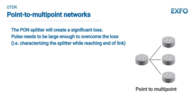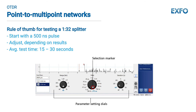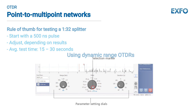Real-time mode is not useful in point-to-multipoint networks. A good rule of thumb for testing a 1 by 32 splitter is to start with a 500 nanosecond pulse and then adjust slightly one way or the other depending on the results. The average test duration should be at least 15 to 30 seconds. Keep in mind that the longer the average test duration, the better the performance — this is a compromise to consider.